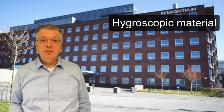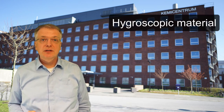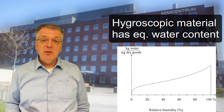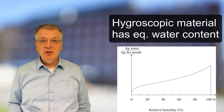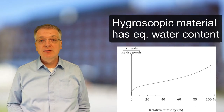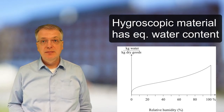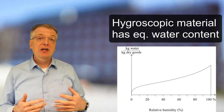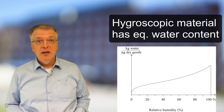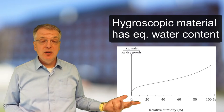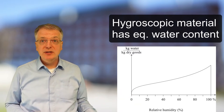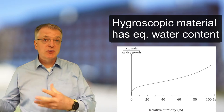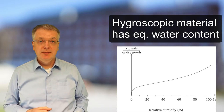A hygroscopic material is a material which, in contact with air, has an equilibrium water content that depends on the relative humidity of the air. Thus, if you have a really dry hygroscopic material and let it come in contact with moist air, it will absorb water from the air.